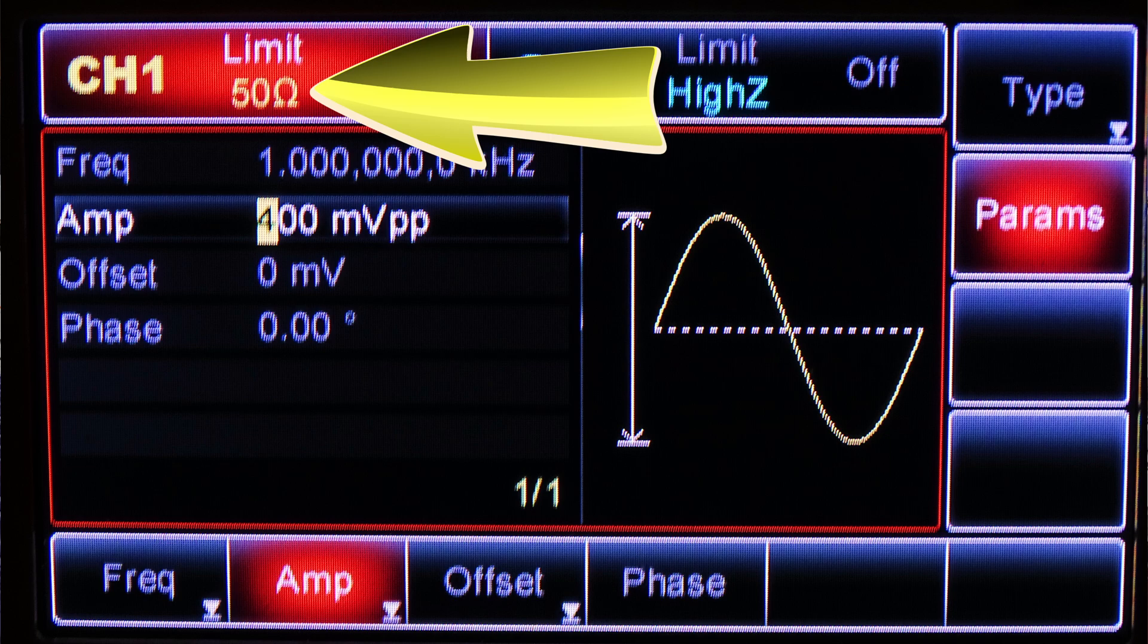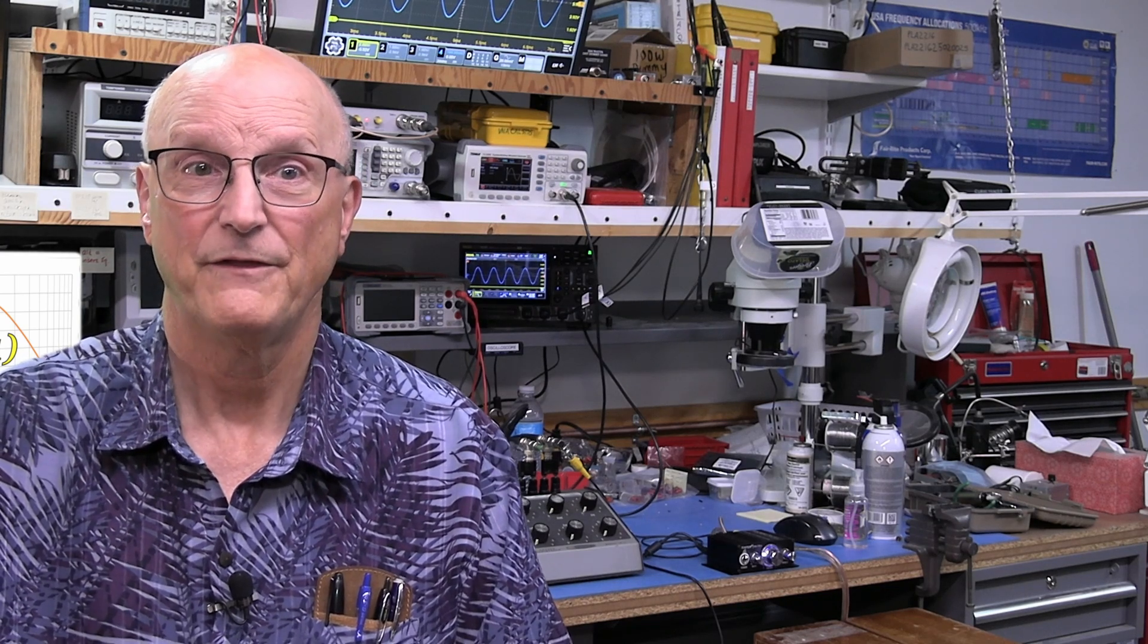The signal generator's output impedance is set to 50 ohms. So, why do I have my signal generator set up for a 50 ohm load and a 50 ohm load attached to it? This is so that the output voltage of the signal generator is virtually unaffected by the load of the amplifier's input.